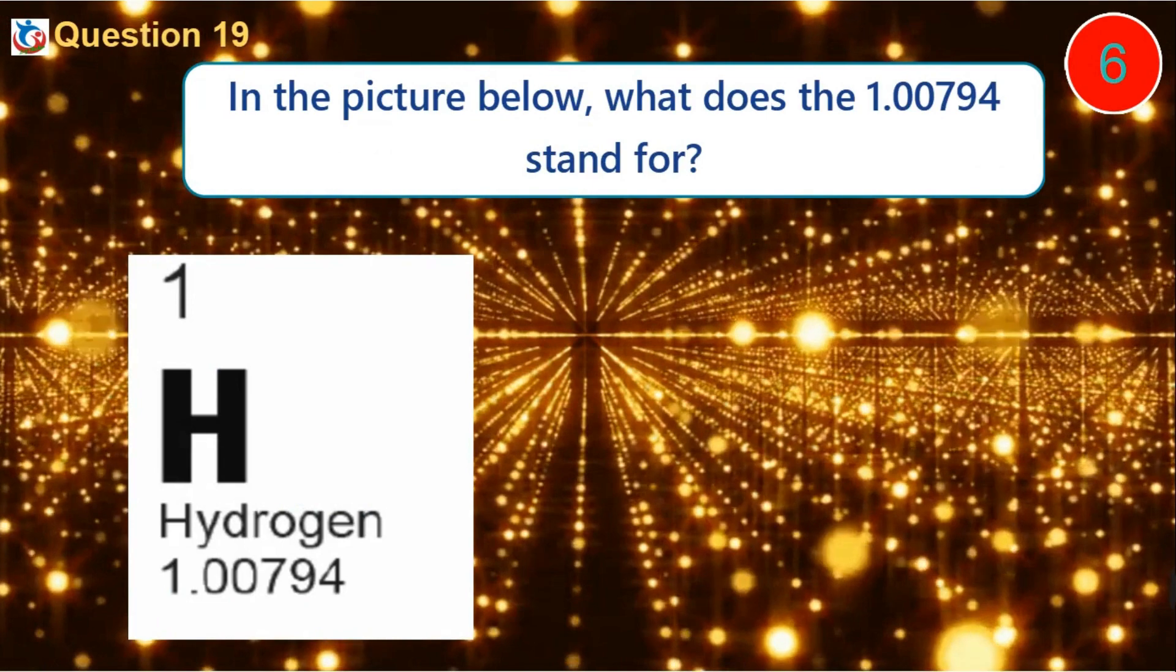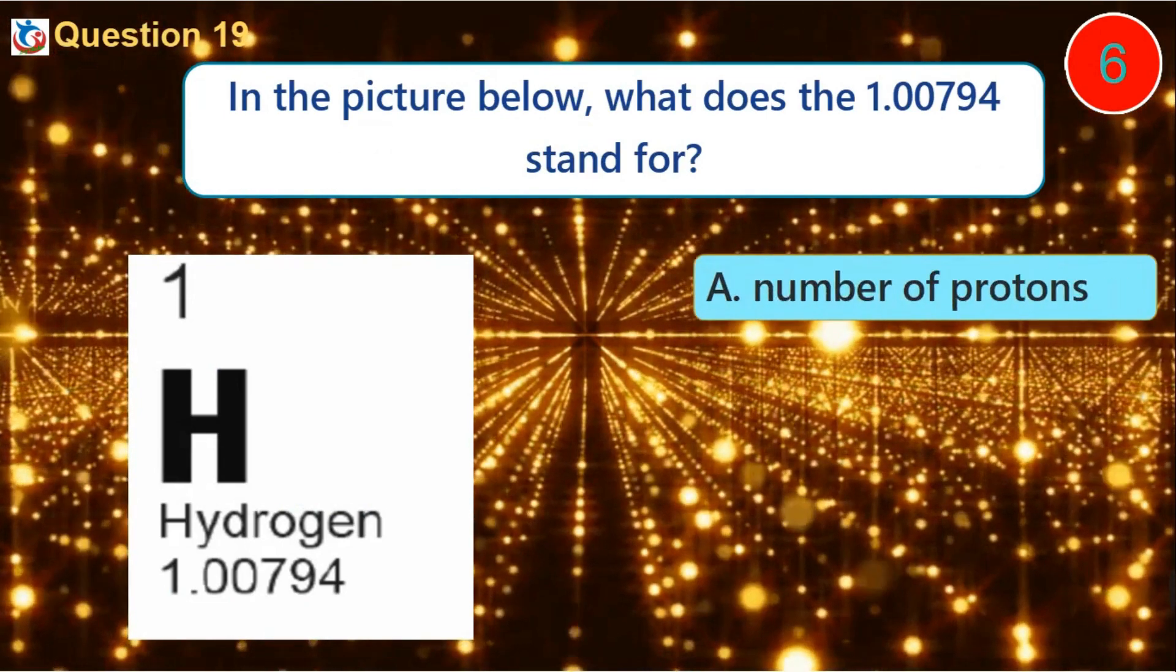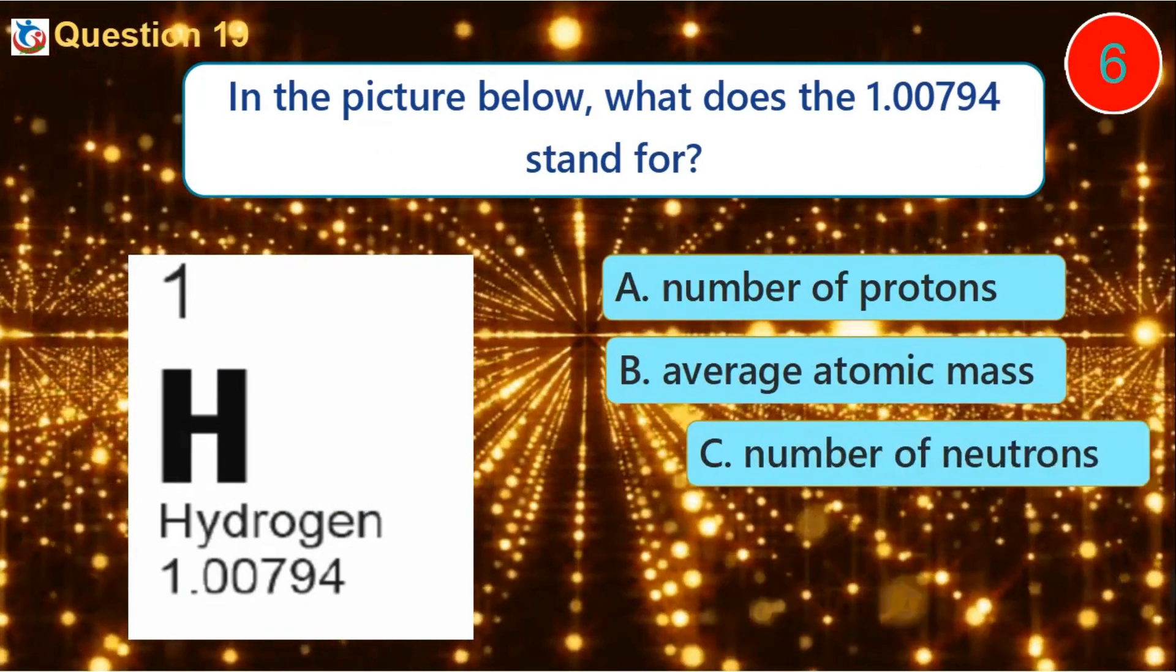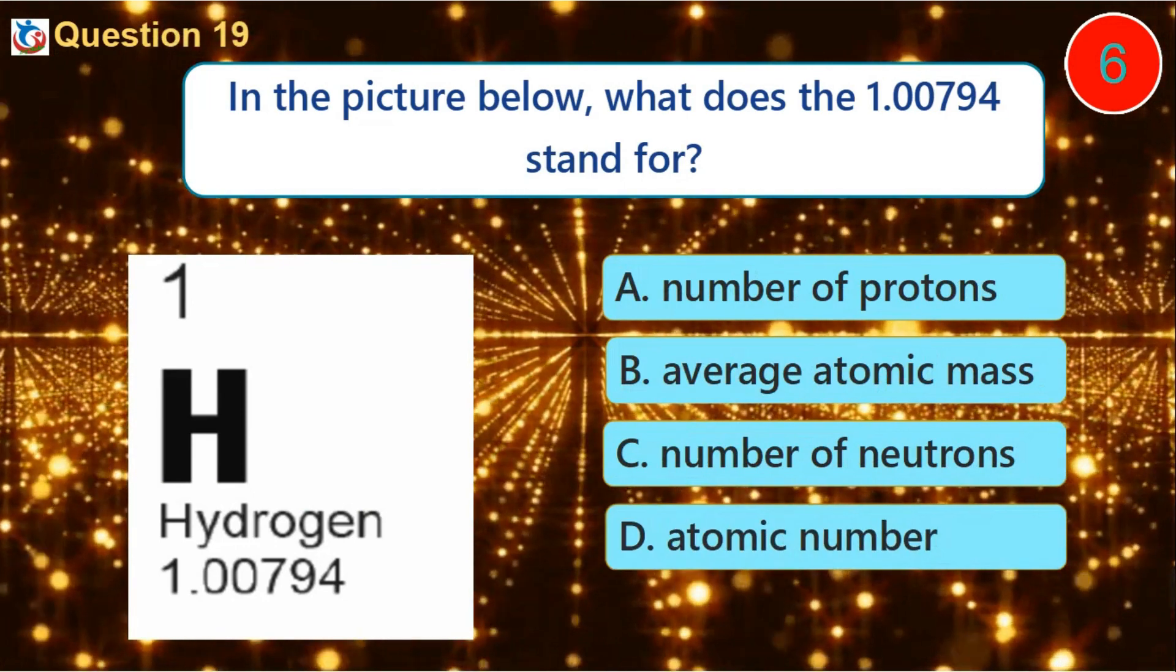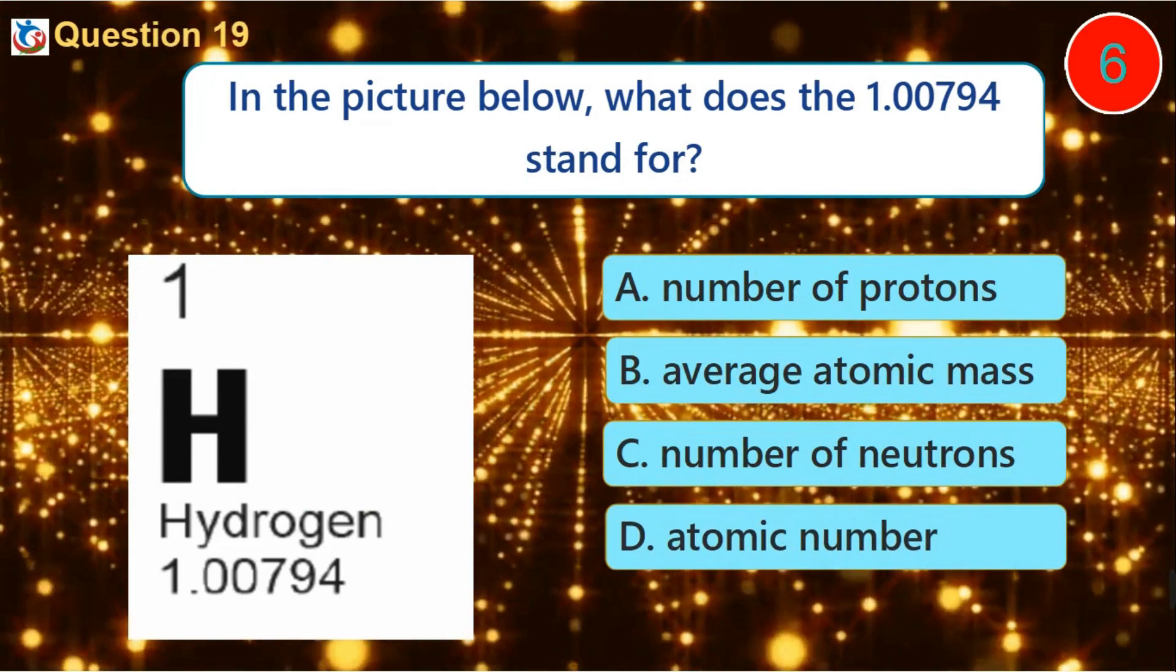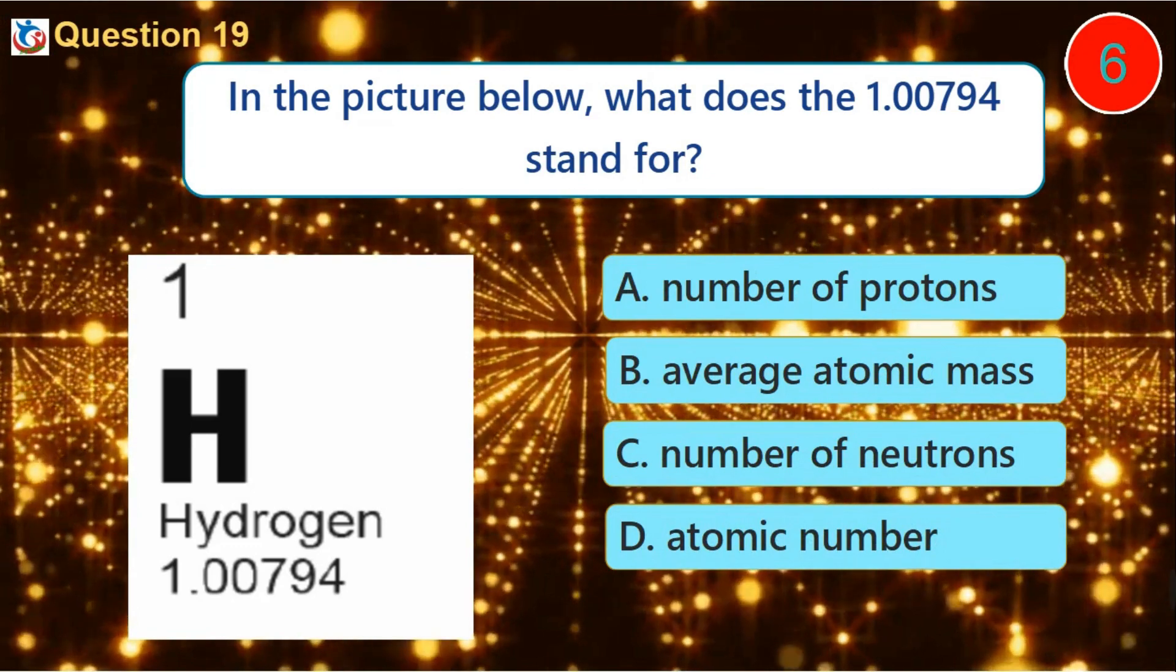Question 19. In the picture below, what does the 1.00794 stand for? A. Number of protons B. Average atomic mass C. Number of neutrons D. Atomic number